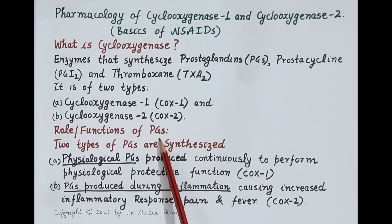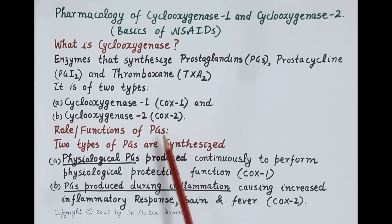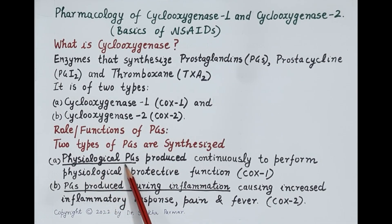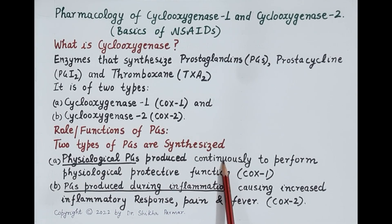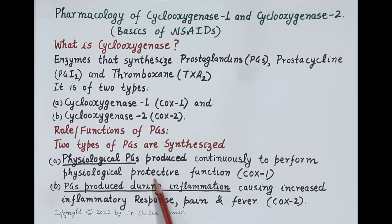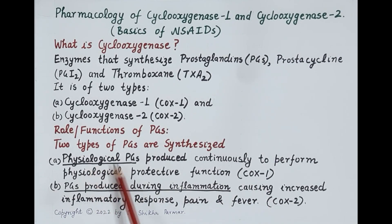Functionally, two types of prostaglandins are synthesized. The first type are physiological prostaglandins. Physiological prostaglandins are produced continuously by the body cells in small amounts throughout our life, and these prostaglandins perform physiological protective functions. COX-1 is primarily responsible for the synthesis of these physiological prostaglandins.